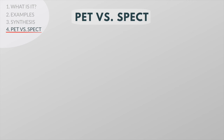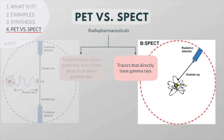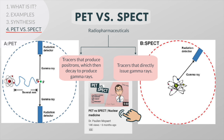PET and SPECT scans are the two most common imaging modalities in nuclear medicine. Both techniques use radiopharmaceuticals to create images. The primary difference between SPECT and PET scans is the type of radioactive tracer used. While SPECT scans employ tracers that directly issue gamma rays of lower energy, PET scans employ tracers that produce small particles called positrons, which then decay to produce higher energy gamma rays. If you want to know more, please watch my video PET vs SPECT, where I explain each technique in detail and highlight the similarities and differences.